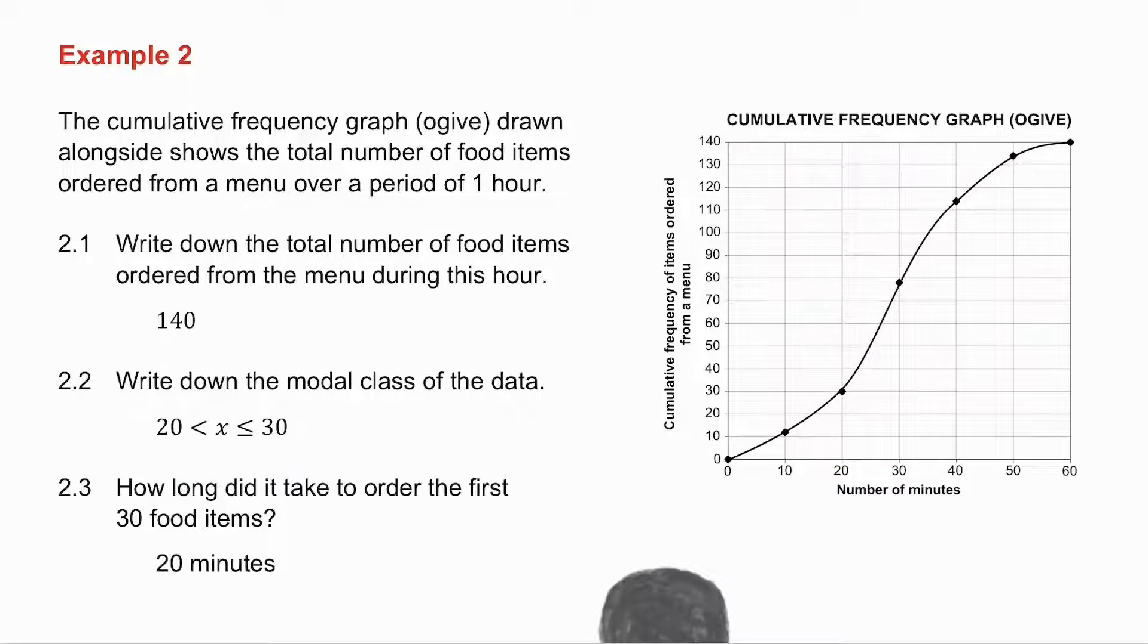2.3, how long did it take to order the first 30 food items? So I go across from 30 items, go down to the time, and it took 20 minutes.